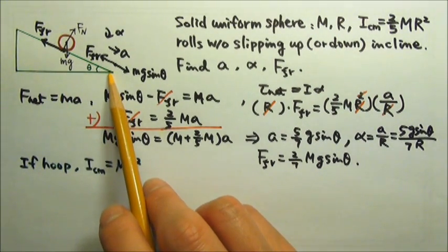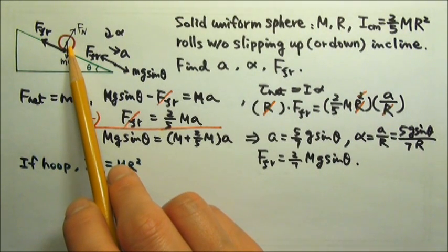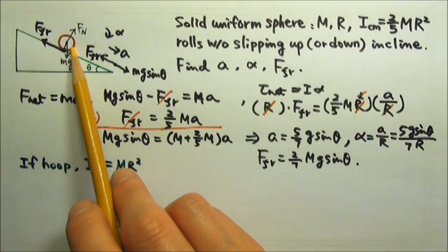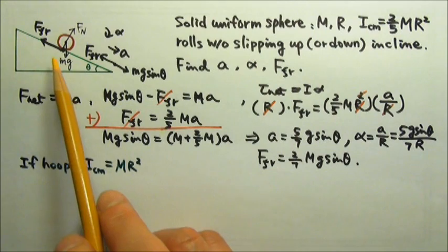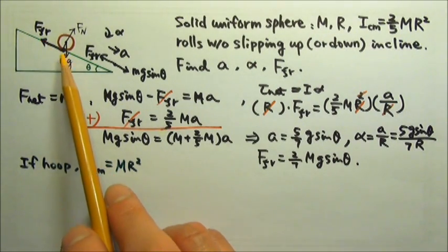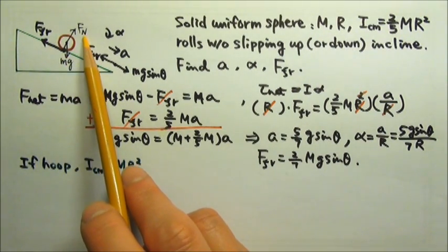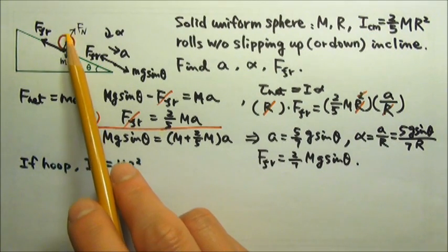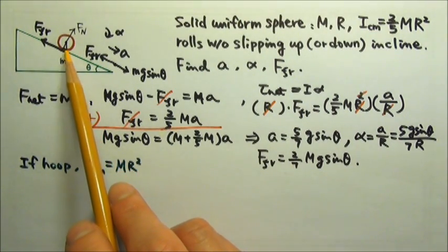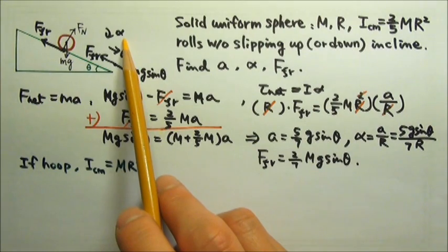What if mu S is too small? If the surface is too slippery, then the object is going to have to roll with slipping. And if there is no friction at all, only mg and normal force, that means there would not be any torque acting on the object. That means there would not be any alpha.